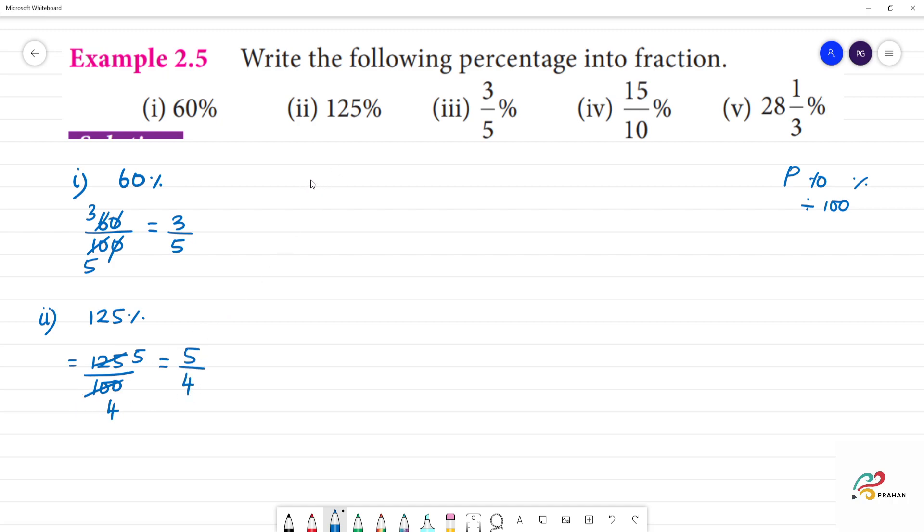Next, third one. 3 by 5. So 3 by 5, number divided by 100. So 3 by 5 divided by 100.